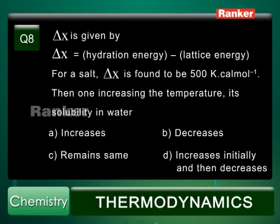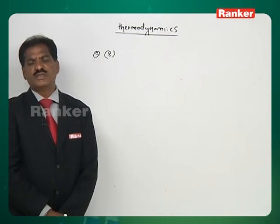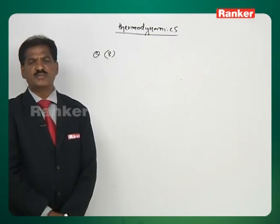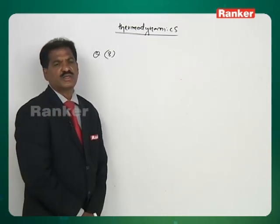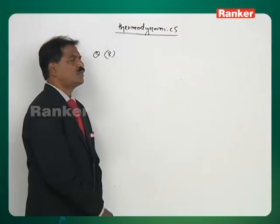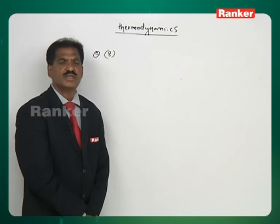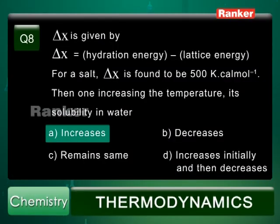Question number 8. ΔU is given as hydration energy minus lattice energy for a salt, found to be 500 kcal per mole. On increase in temperature, how does solubility change? Since the sum of hydration energy and lattice energy is positive, the dissolution process is endothermic. Since dissolution is endothermic, with rise in temperature the solubility always increases. Answer is A.